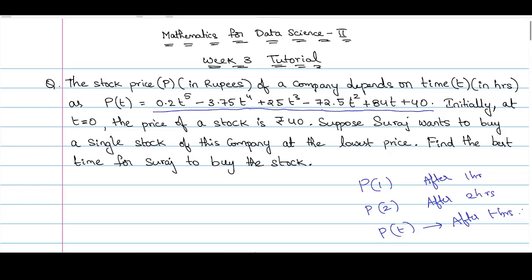Suppose Suraj wants to buy a single stock of this company at the lowest price. Find the best time for Suraj to buy the stock. Simply, we have to find the value of t for which P(t) attains the minimum value — basically, we have to find the point of global minima of P(t), which will be the best time for Suraj to buy the stock.